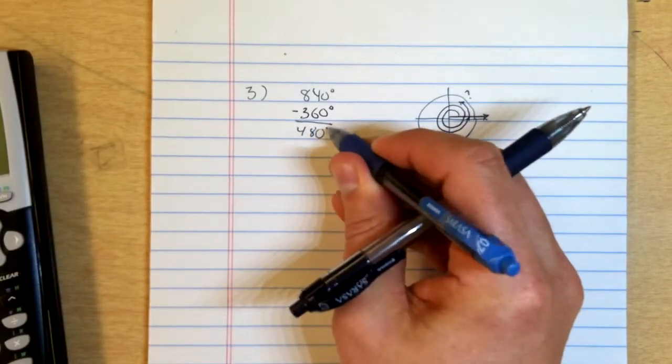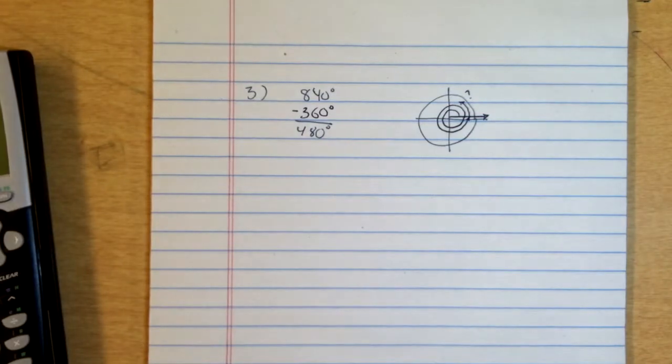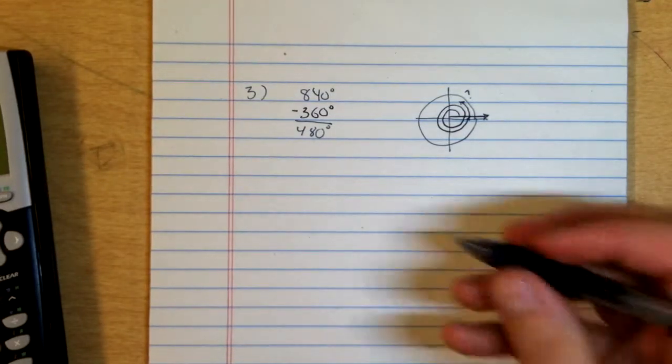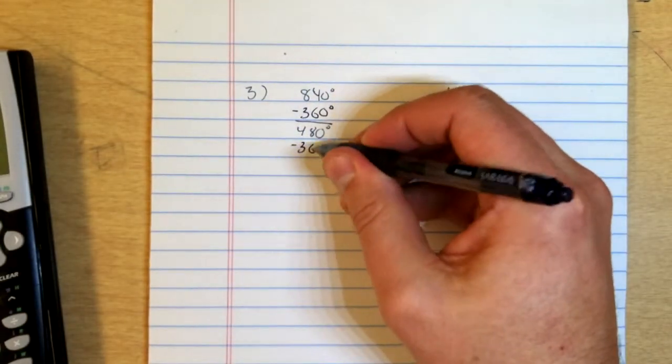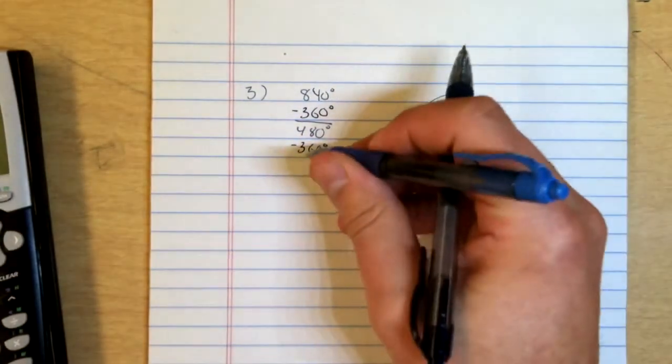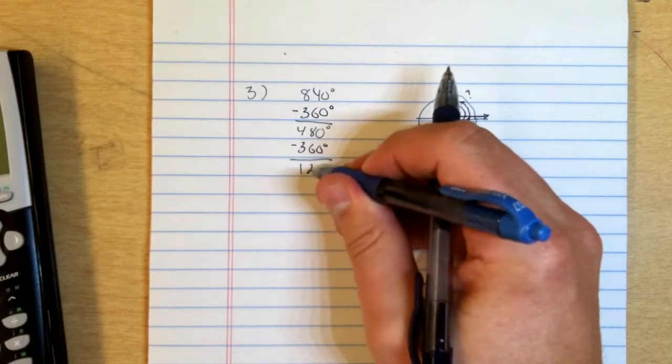Now 480 degrees is still more than 360, and we need to keep subtracting until it gets to be less than 360. So now we'll subtract 360 again, and maybe we'll do that without a calculator this time. We get 120 degrees.